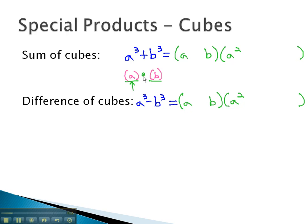In the middle, we'll multiply them together, a times b. At the end, we'll square the last term, b².